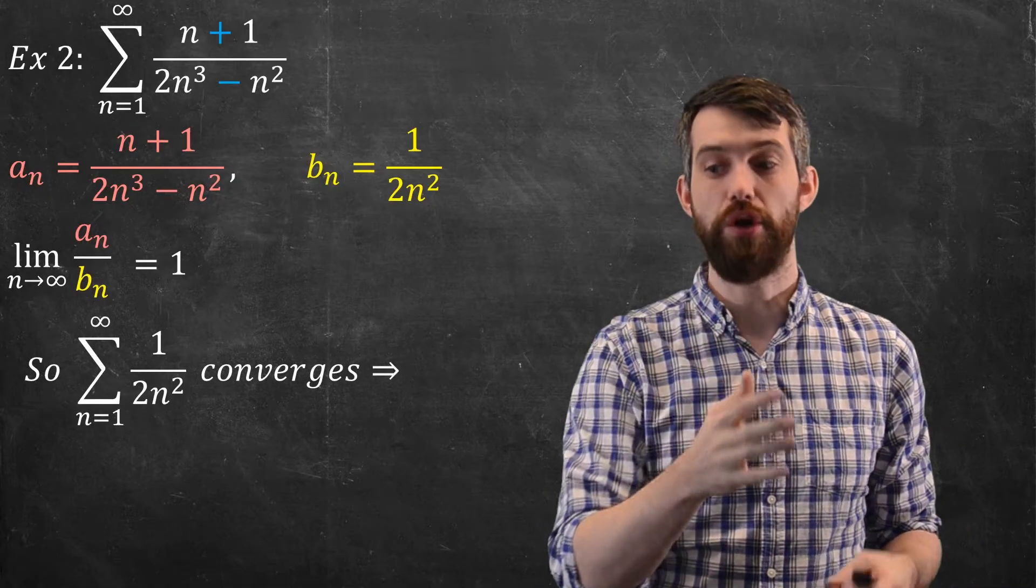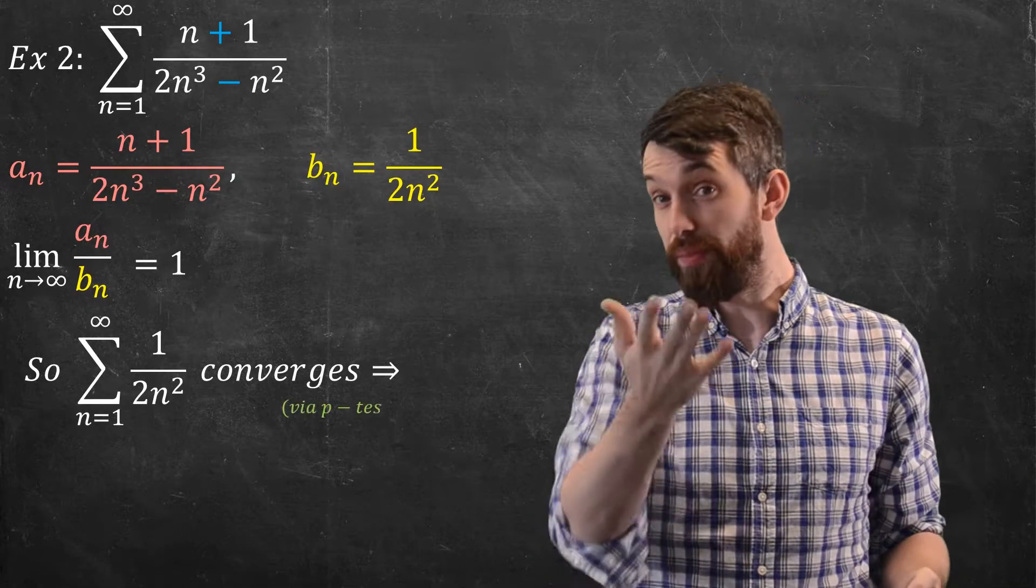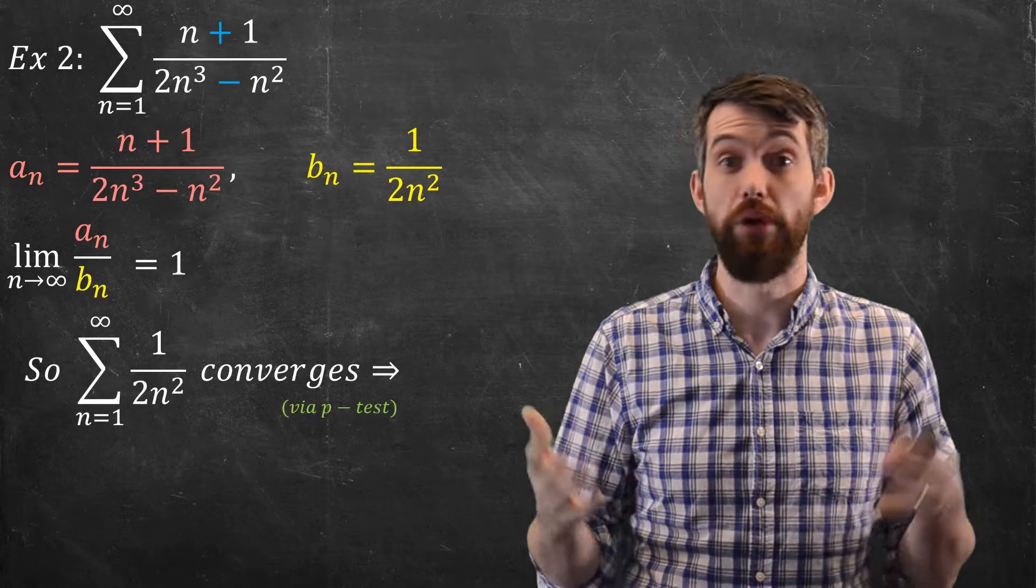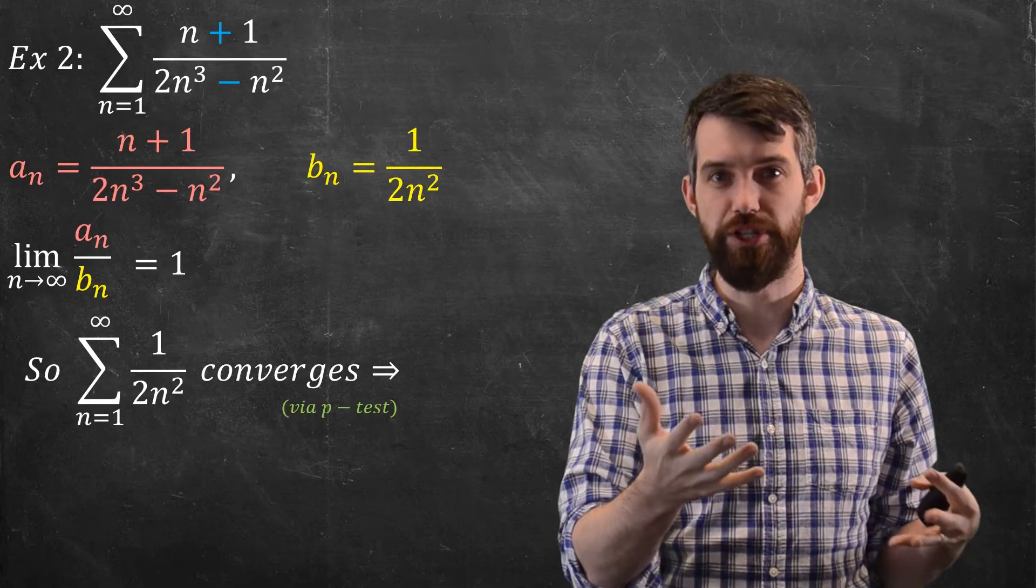Now, because the b_n's are going to converge, that's something that we have by the p-test that we've seen before, the integral of 1 over x squared from 1 to infinity converges,